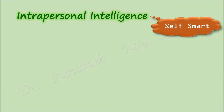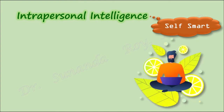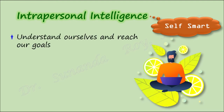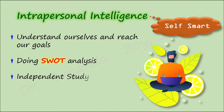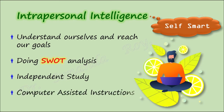Intrapersonal intelligence, or self-smart, helps one to know oneself. Knowing one's own feelings, goals, anxieties, abilities, and planning according to one's strengths and limitations are included in this intelligence. We should all try to develop intrapersonal intelligence as it helps us to understand and reach our goals in life according to our traits. Students can be made to do SWOT analysis — identifying one's own strengths, weaknesses, opportunities and threats. Teachers can also give opportunities for independent study and use computer-assisted instructions that will give students time to work by themselves and understand their own potentials.